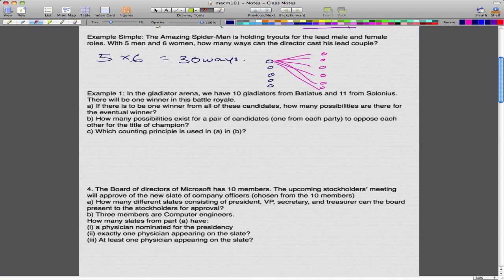Example 1. In the gladiator arena, we have 10 gladiators from Batiatus and 11 from Solonius. Yes, I am highly addicted to Spartacus, that's the best series I've seen so far, other than Game of Thrones. There will be 1 winner in this battle royale. If there is to be 1 winner from all these candidates, how many possibilities are there for the eventual winner?